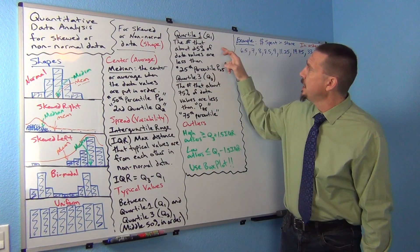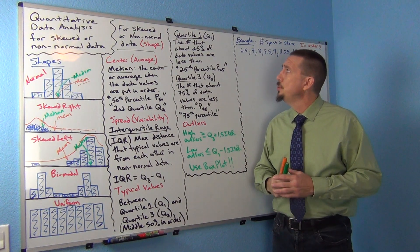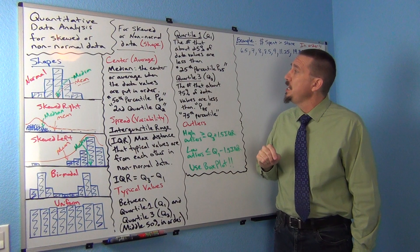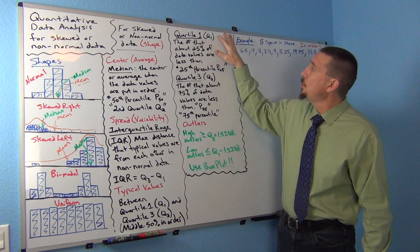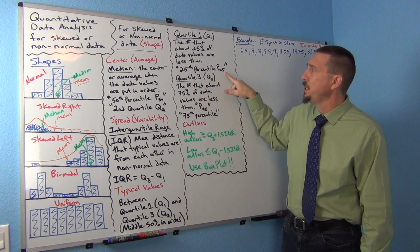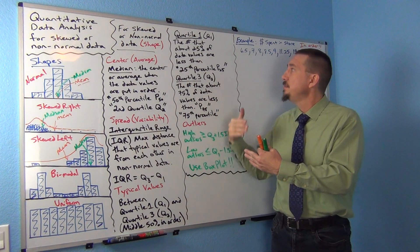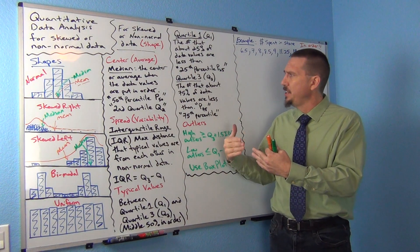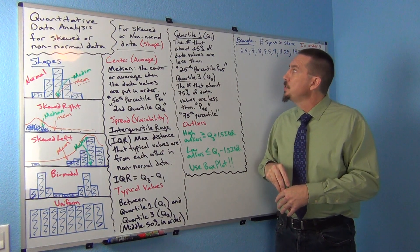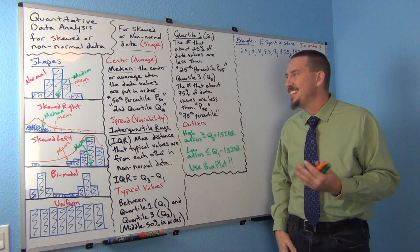So let's look at quartile 1 and quartile 3. The number that about 25% of the data values are less than is called quartile 1 or Q1. It's also referred to as the 25th percentile or P25 because about 25% of the numbers when they're in order are less than this divider. Think of quartiles as dividers. If you have one quarter in your pocket, it's 25 cents - that's a good way to remember it.